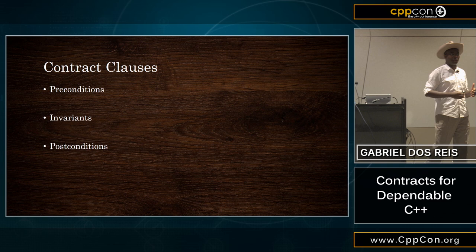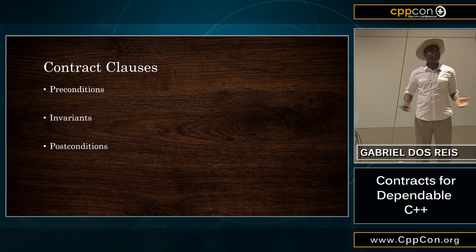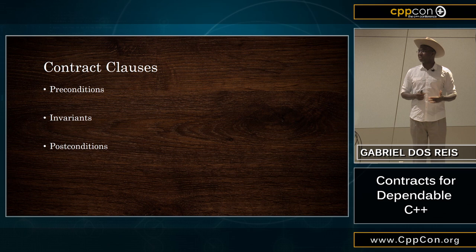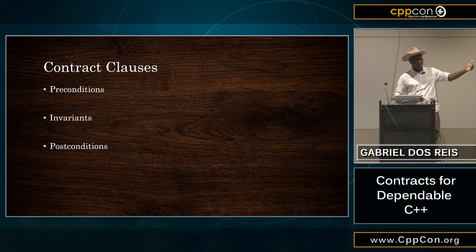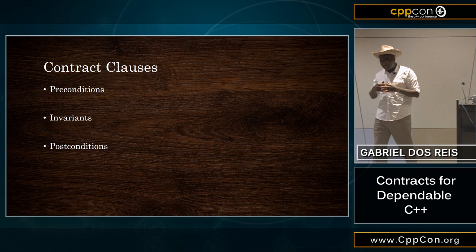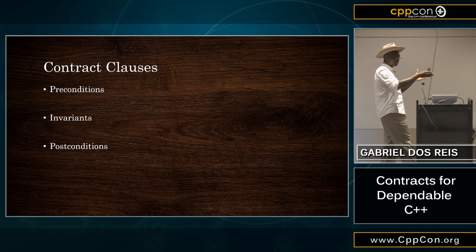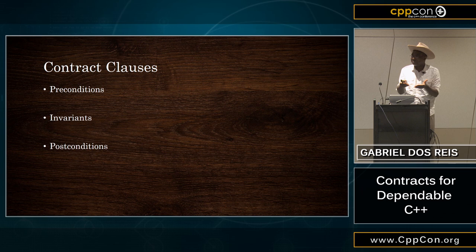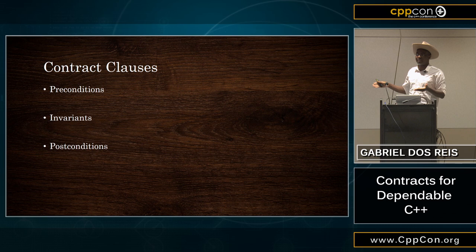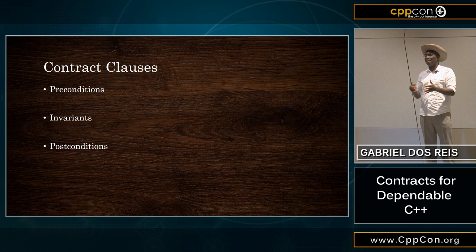What we call the precondition — essentially, you want to call a function. Well, you can call that function only if certain requirements are met. In return, the function will perform some action on your behalf. That's the privilege you get: if you meet the requirement, then you get the privilege. You also see postconditions. And while the action is being performed, or while you're calling other functions on an object, you have certain things that remain invariant.